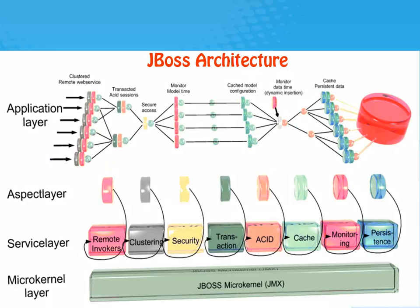Coming to JBoss Architecture. When JBoss starts up, one of the first steps performed is to create an mBeans server instance. The JMX mBeans server in the JBoss architecture plays the role of a microkernel. All other manageable mBeans components are plugged into JBoss by registering with the mBeans server.